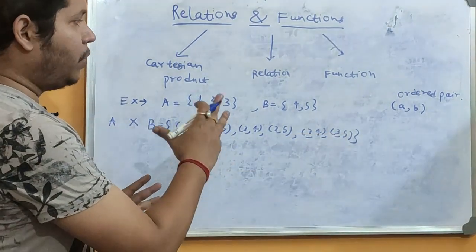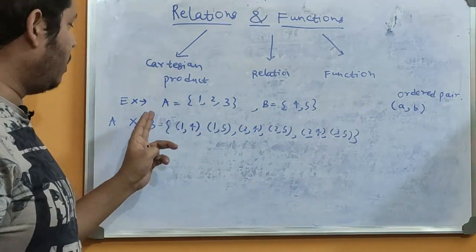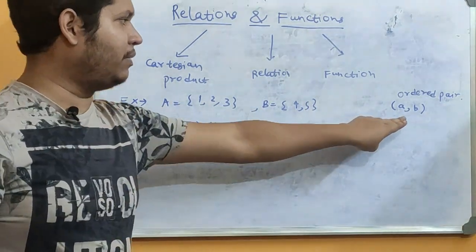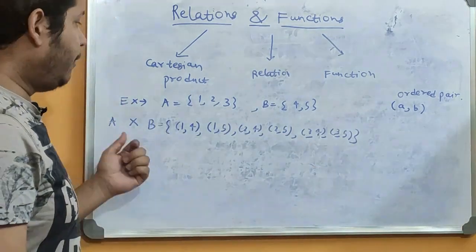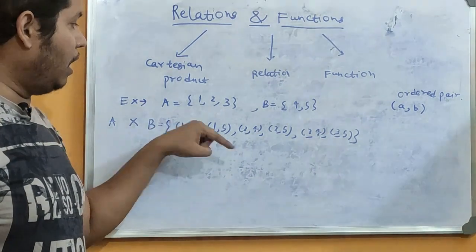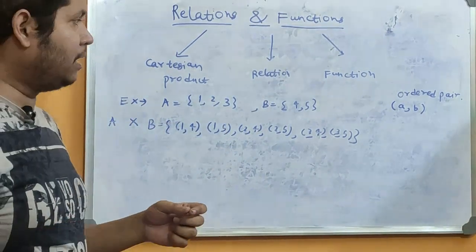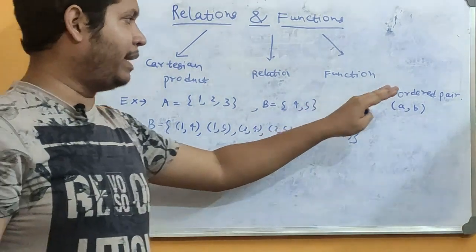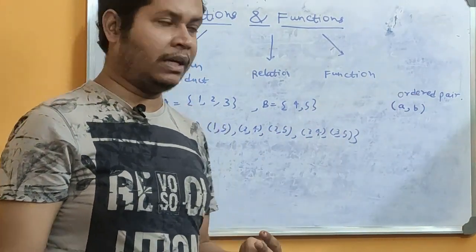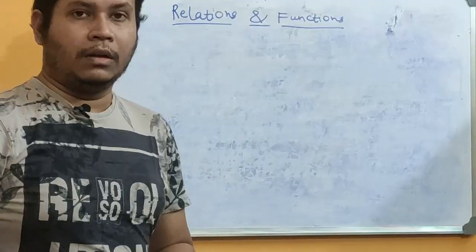That is what Cartesian product is all about. Similarly, since we have done the product of 2 sets, we get pairs. But if we do the product of 3 sets, we will get a combination of 3 elements each — in those cases we will be getting ordered triplets.